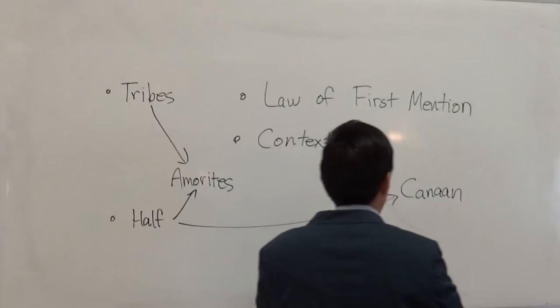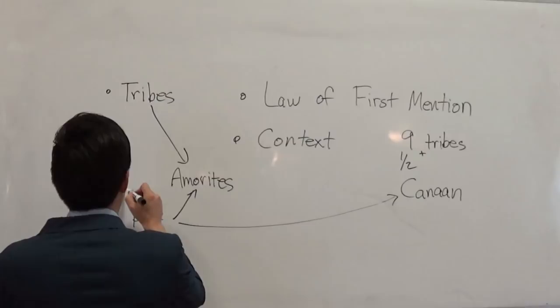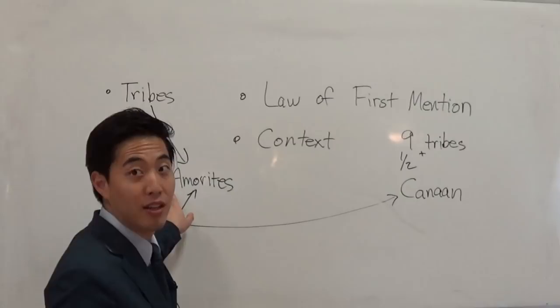So it confirms my suspicion then. Nine tribes and the remaining half of Manasseh. Because remember, what happened to the other two and a half right here? Right here, the Amorites. So that would make sense.